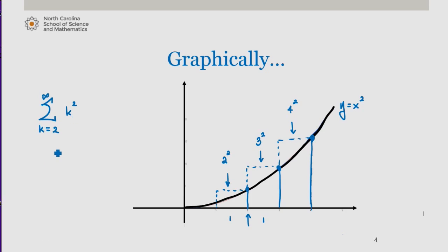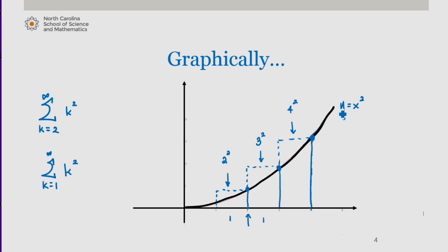It doesn't include the very first term of the series we were investigating, but the sum of these rectangles is going to be greater than the area under the curve y equals x squared from 1 to infinity. We found that the integral from 1 to infinity diverges. Now, this sum of the areas is greater than that, so this sum must also diverge. And if this sum also diverges, then certainly if we add one more term — which would be 1 squared — then the entire series diverges.